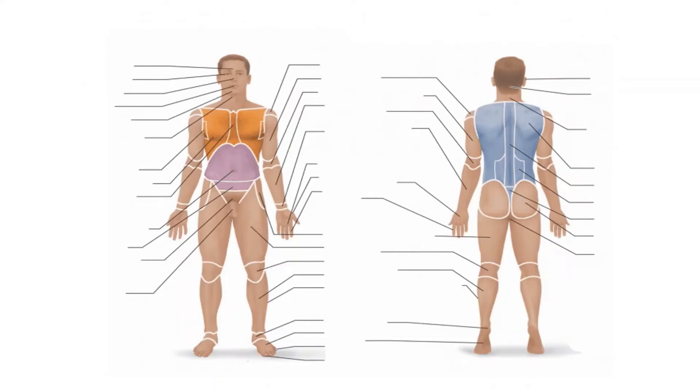Alright, so here we have a fellow in anatomical position, and there's a lot of lines, and sometimes this intimidates folks, but let's just go through these one by one by one. So I'll give you the common term, if there is one that's common to us in English, and then I'll give you the formal term. So up at the top, we have a forehead. This is frontal. We have an eye, and it's not actually pointing to the eye. If we're pointing to the eye, you could say optic. Orbital. That's the eye socket. The eye itself could be optic.